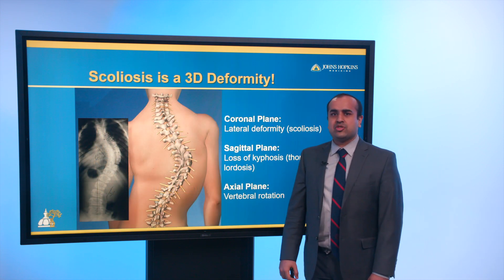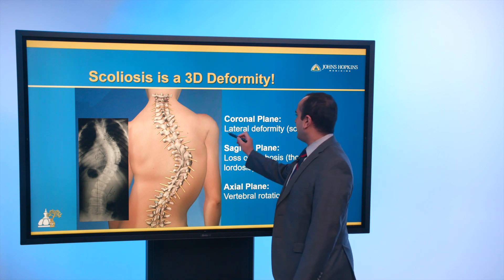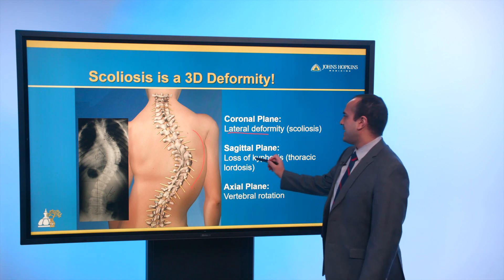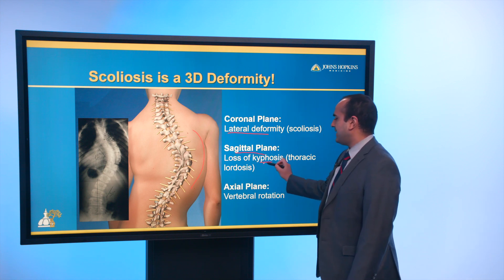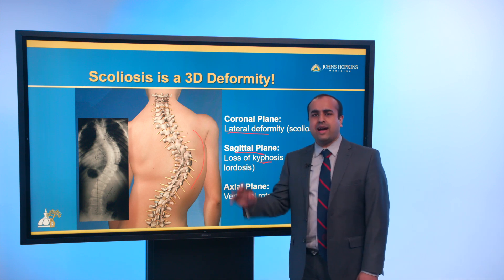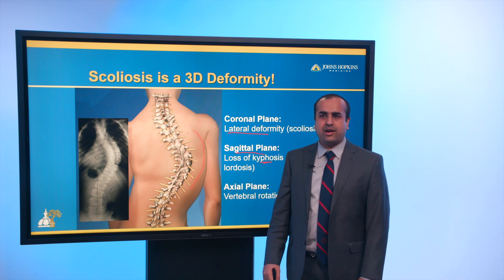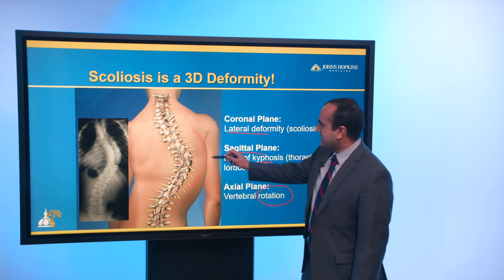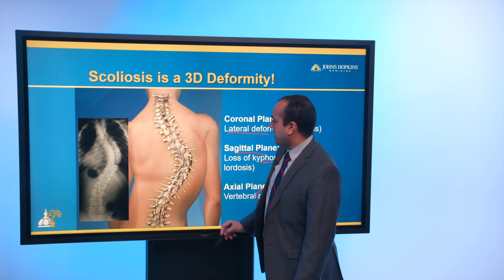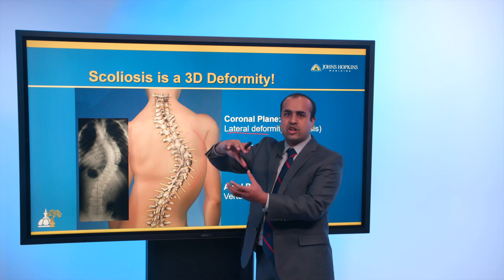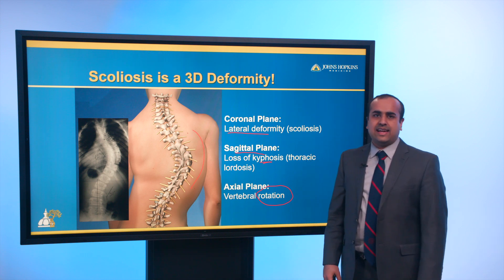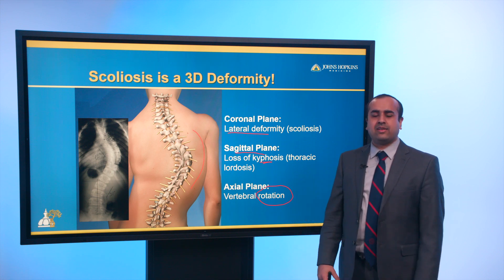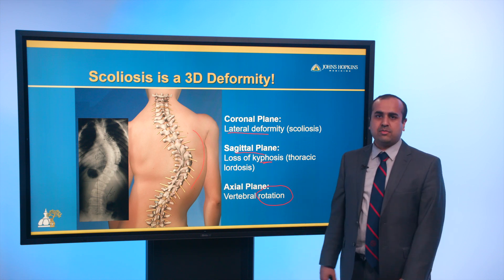Scoliosis is a three-dimensional deformity. In the coronal plane, there's a lateral deformity — the most commonly observed feature. In the sagittal plane, there's actually a loss of kyphosis, so the thoracic spine is lordotic rather than kyphotic as it naturally should be. In the axial plane, there's significant rotation. As shown on this diagram, the different vertebral bodies are rotated with respect to each other, which leads to asymmetry of the ribs, asymmetry of the scapula, and the prominent features noticeable by families.